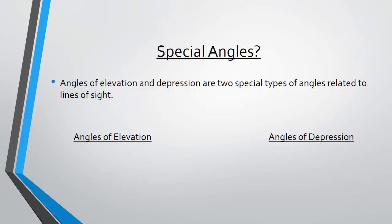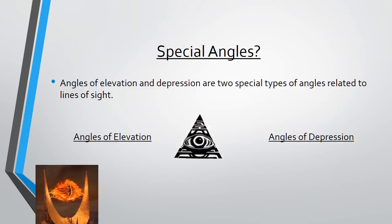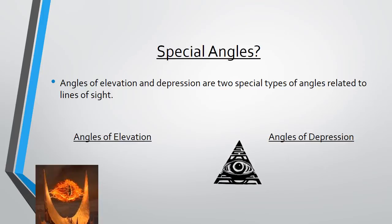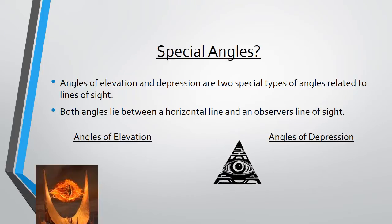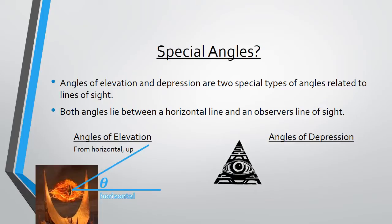Angles of elevation and angles of depression. Here are two volunteers to demonstrate. Both angles lie between a horizontal line and an observer's line of sight. Our first volunteer is going to demonstrate angles of elevation, which are from the horizontal up. So horizontal line, up — there's an angle of elevation.